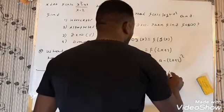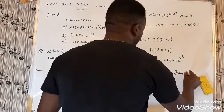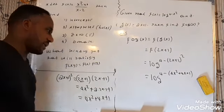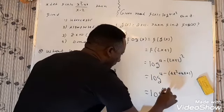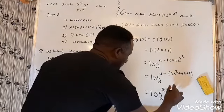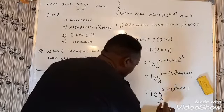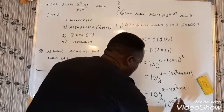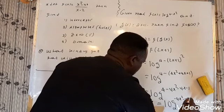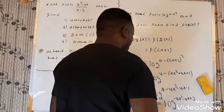So the argument is directly given by 4x² plus 4x plus 1. Therefore the composition is exactly the logarithm of four minus 4x² minus 4x minus 1, which simplifies to exactly the logarithm of minus 4x² minus 4x plus 3.